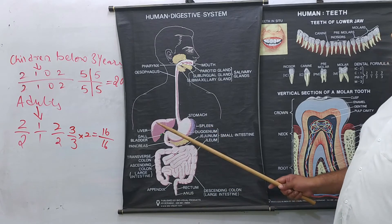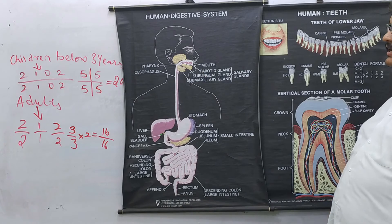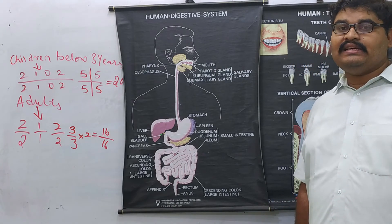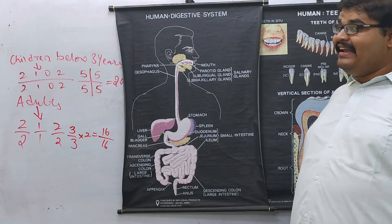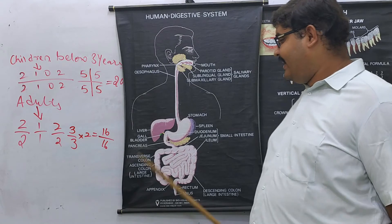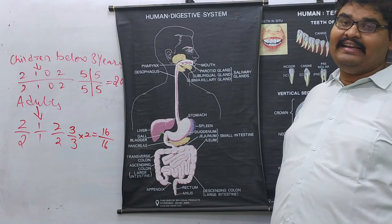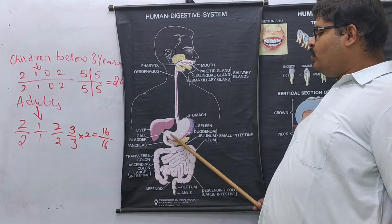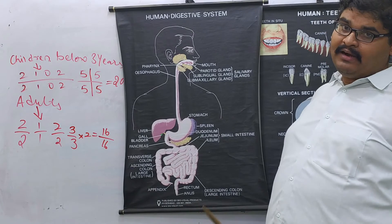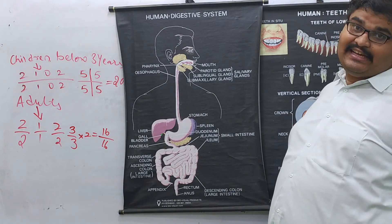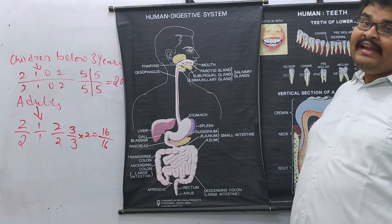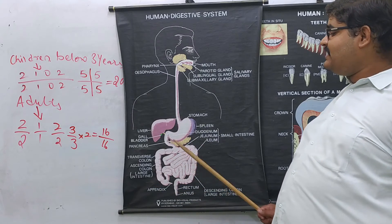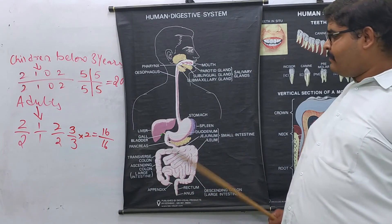Before the chyme enters the small intestine, the liver secretes bile — a green-colored liquid. The gallbladder temporarily stores the bile. Bile acts upon the acidic food arriving from the stomach: since bile is alkaline in nature, it neutralizes the food and makes it alkaline, which is essential for further digestion.